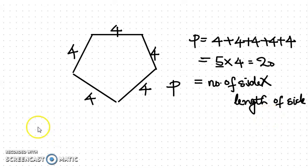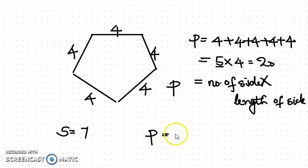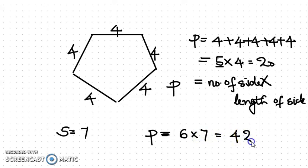For example, in a regular hexagon where all sides are 7 cm: it is a hexagon, so 6 sides are there, and all sides are the same. So 6 times 7 equals 42 — that will be the perimeter.